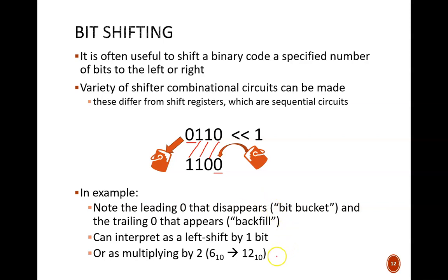We could also interpret this bit shifting as multiplying by 2. In unsigned binary, the input converts to decimal 6, and the output to decimal 12. Shifting to the left and backfilling with 0 always multiplies by 2 in binary, because the base is 2. This is akin to multiplying by 10 in decimal, where the base is 10.